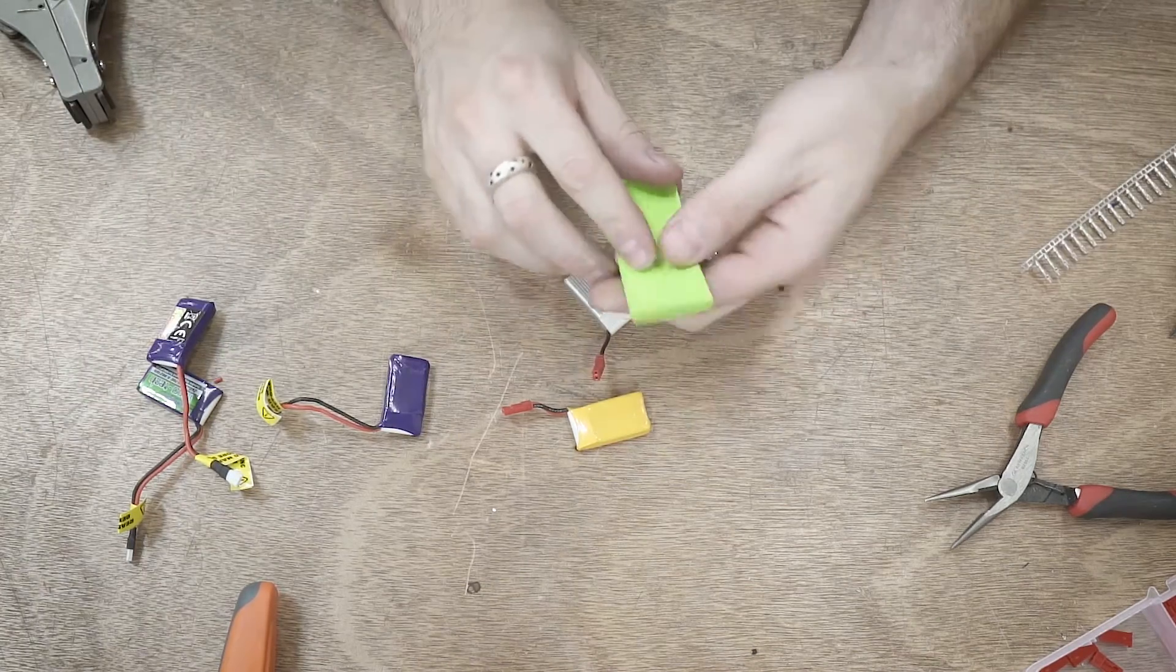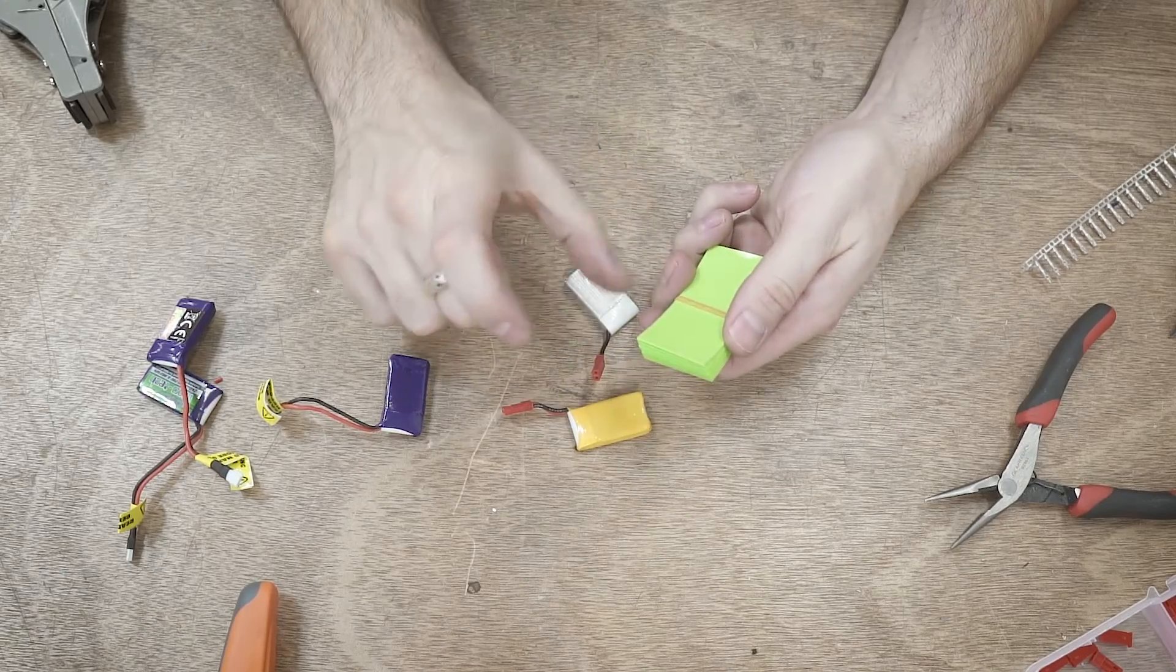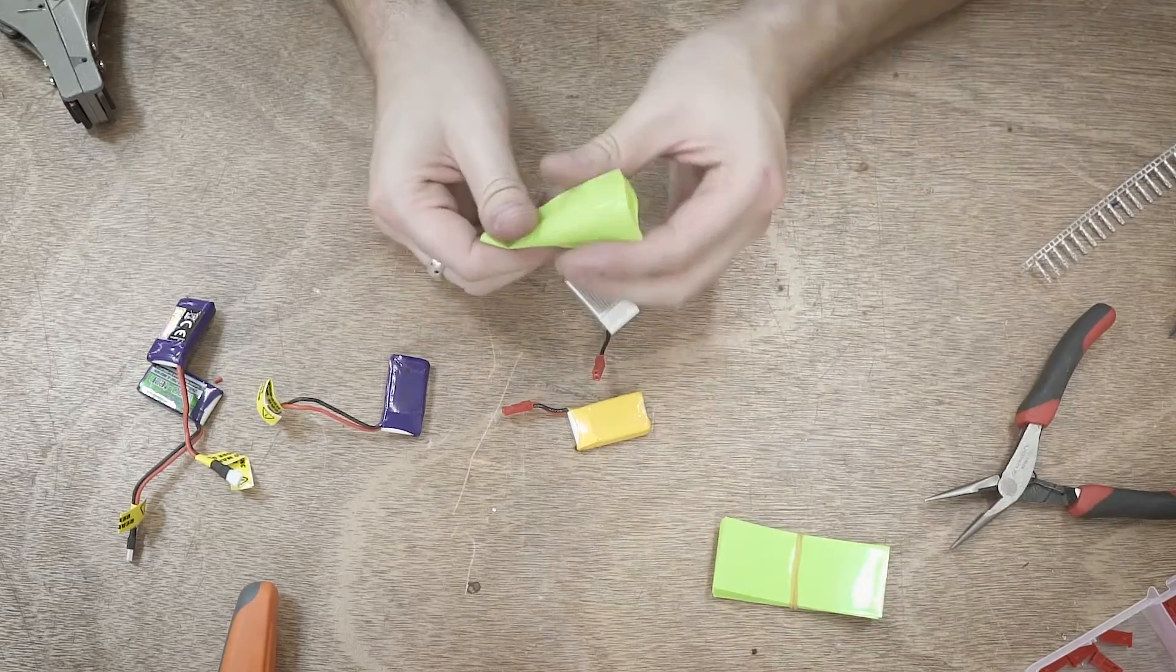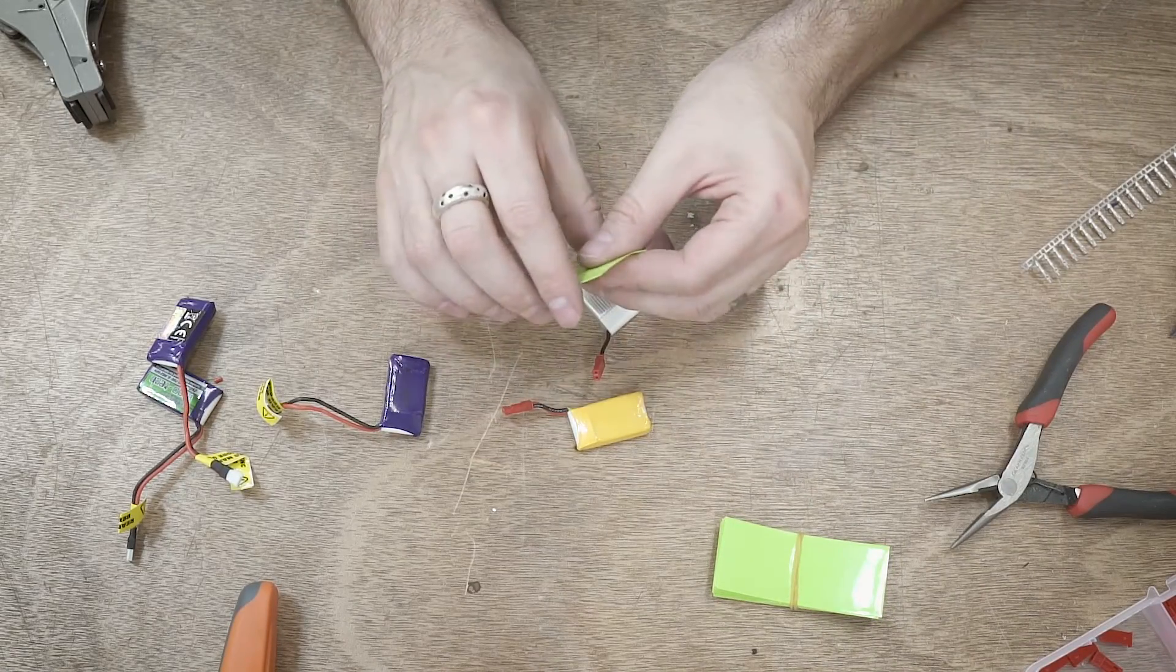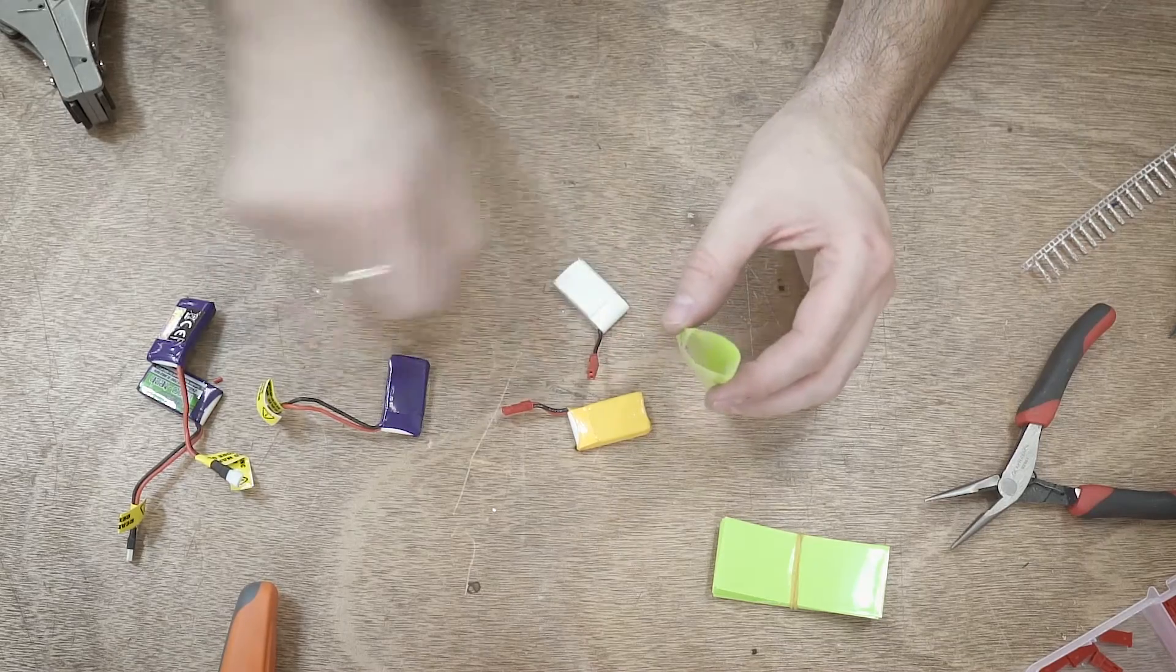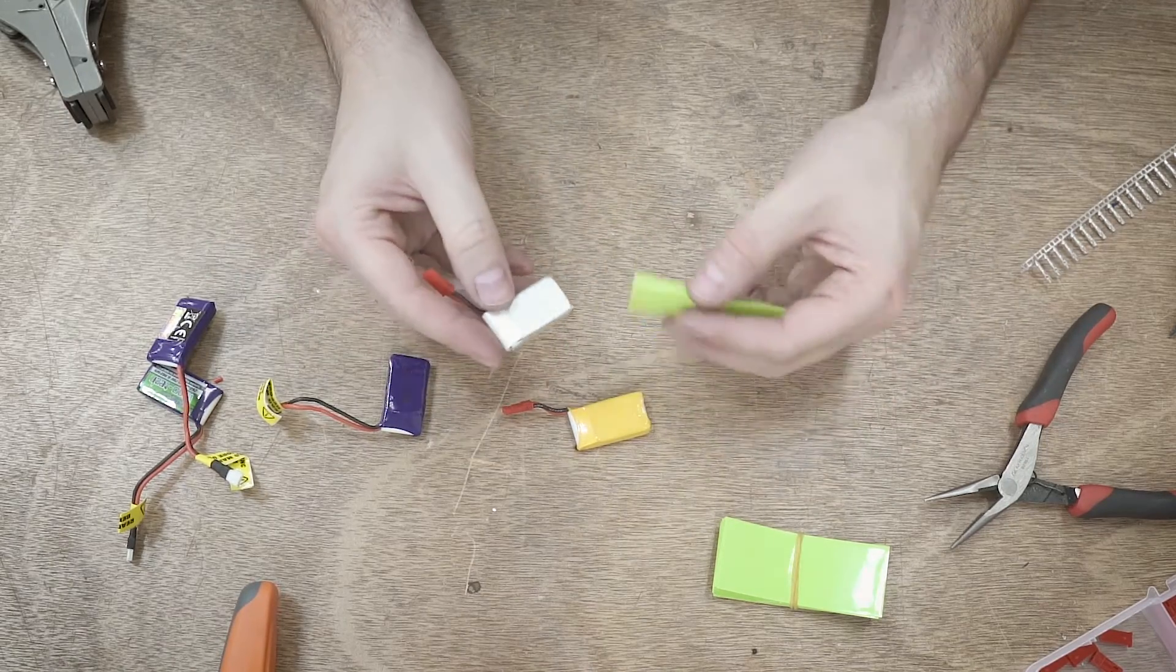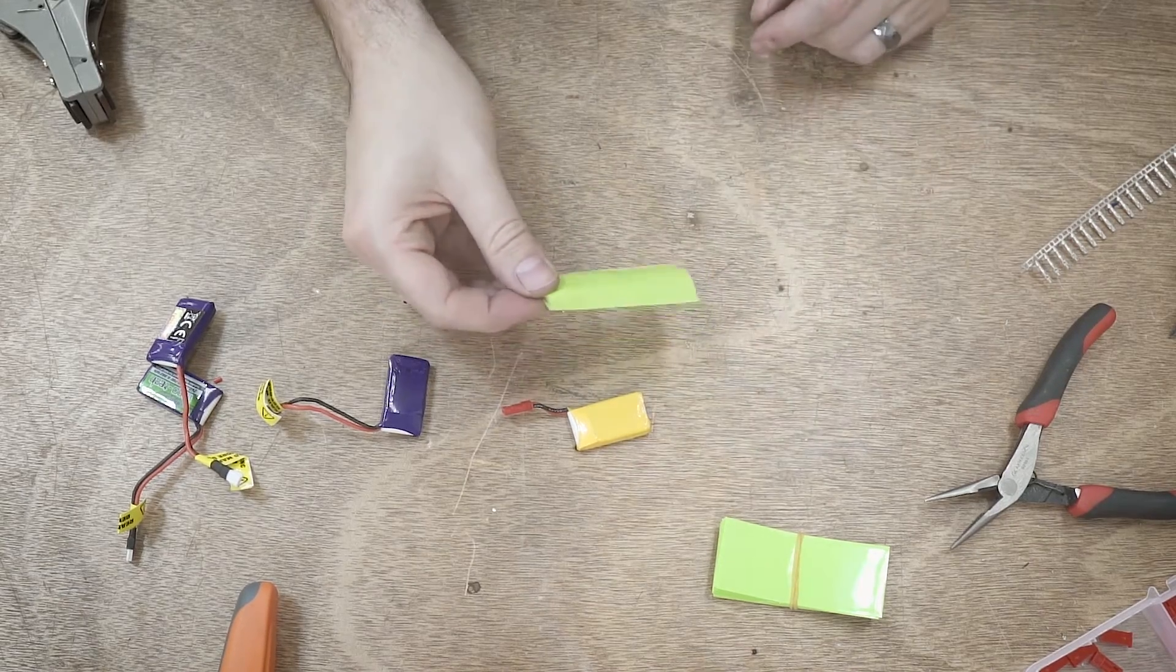I'm using this heat shrink made for 18650 cells, those round AA size cells. This is PVC. It's a little bit different than the rubber heat shrink you're normally used to seeing. This is PVC and it melts quite a bit quicker and at a lower temp. You don't need to have the temp on it for as long, which is good because this is a battery. You don't want to heat it up too much. I'm just going to cut this down to size, heat shrink it, and we'll be good to go.